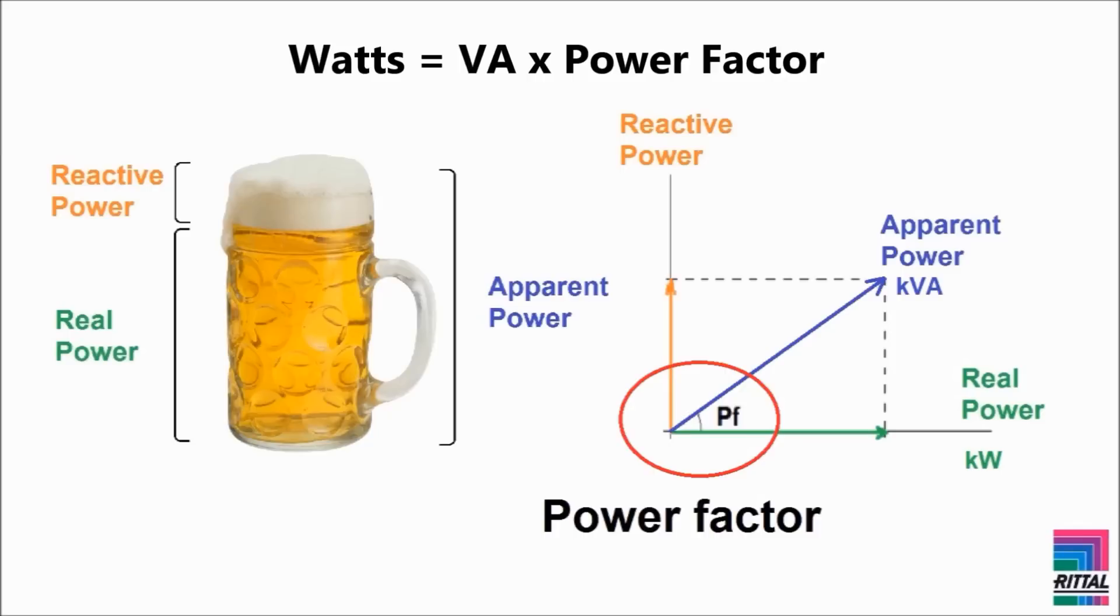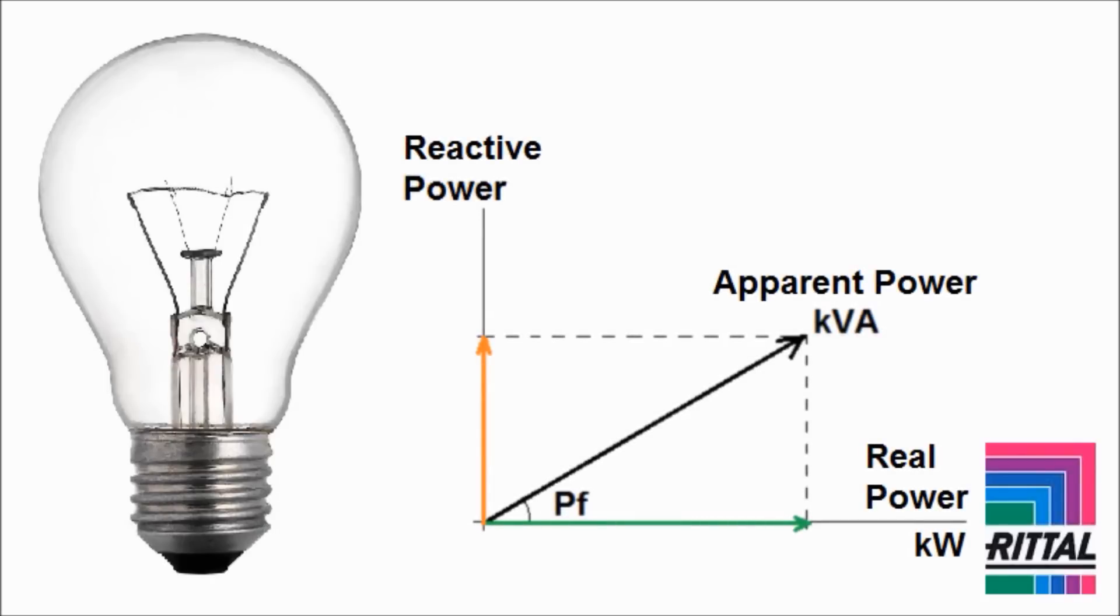Without going into too much detail, let's look at a simple example. An old-style non-power saving incandescent light bulb is always rated in watts. This is because the light bulb is a pure resistive load and it has a constant power factor of 1. So, from the above formula, it is clear that the volt amp rating of this light bulb is the same as its rating in watts.